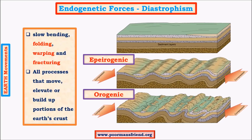Epirogenic movements occur over a very vast area. Even though the changes are significant, we cannot easily perceive them from a small distance because they take place over distances of a few thousand kilometers. A person standing in such a region would still see what looks like a flat area. However, a satellite image would clearly show the huge change in shape of landform over a greater distance.